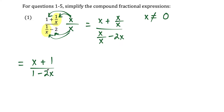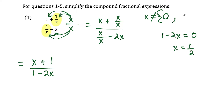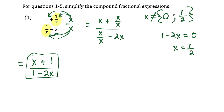There's another x value that would make this expression undefined. If one minus two x were equal to zero, that gives us an x solution of one half. So x cannot equal zero, and it also cannot equal one half. We could say that this expression is equivalent to the simplified expression for all x, except when x equals zero or one half.